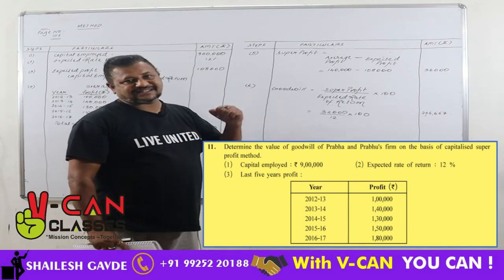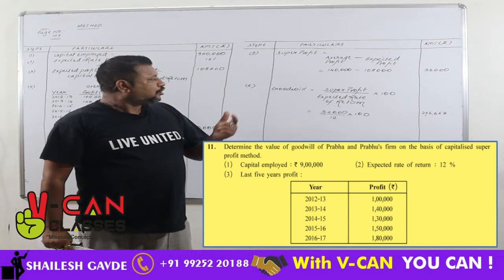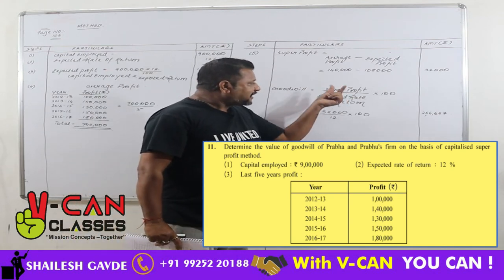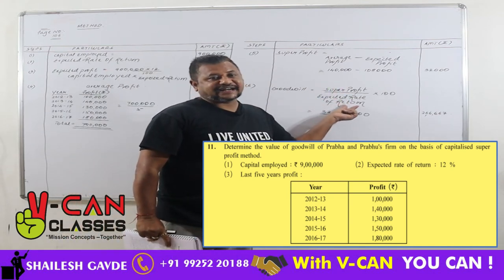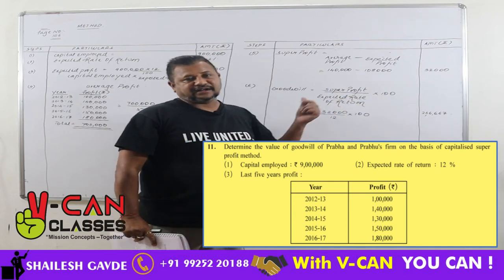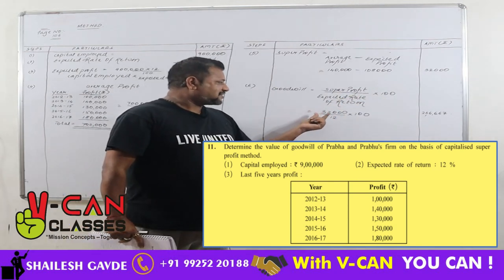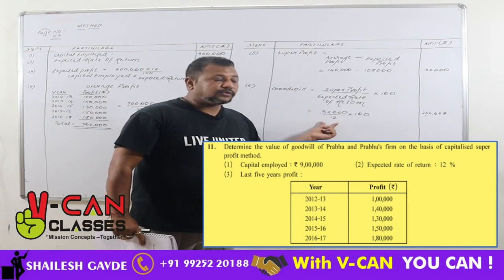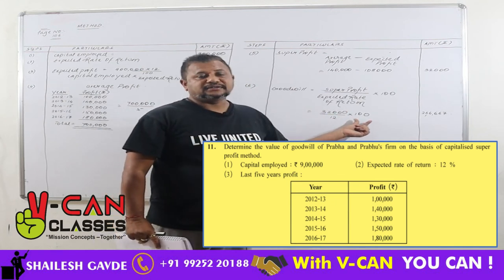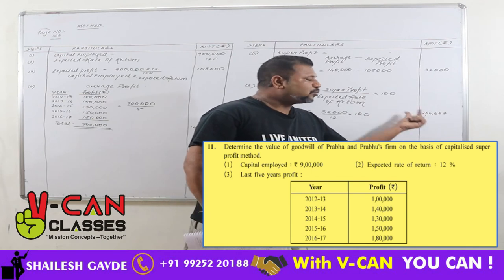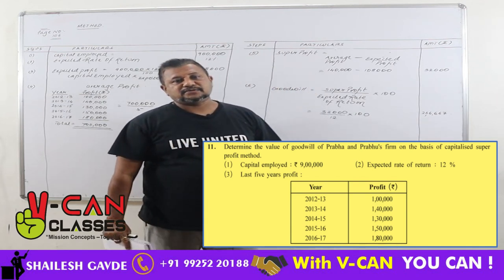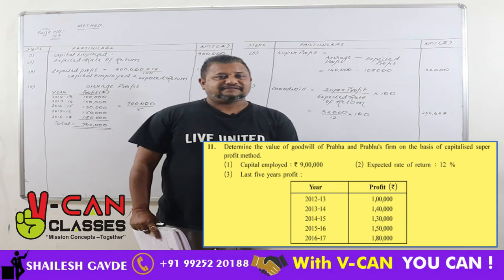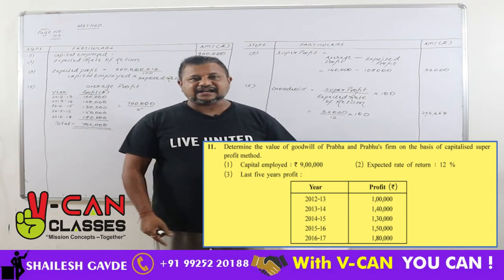Step 6: goodwill equals super profit divided by expected rate of return, into 100. That is 32,000 divided by 12, into 100 — the value of goodwill is 2 lakhs 66,667. So this was question number 11.